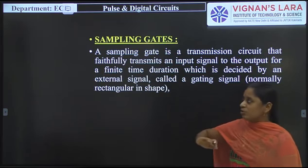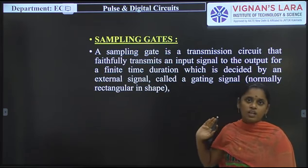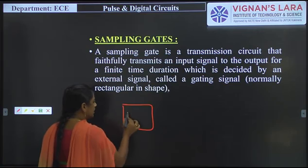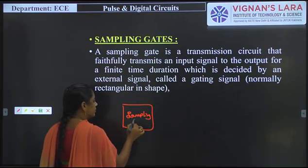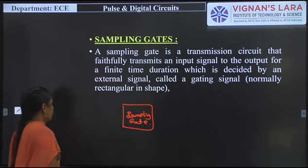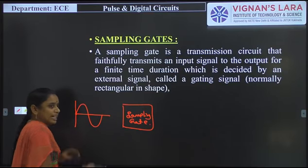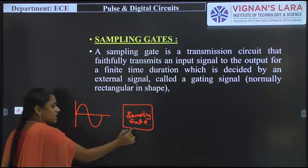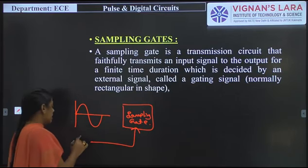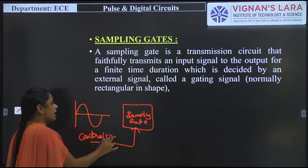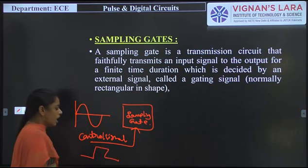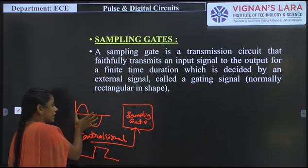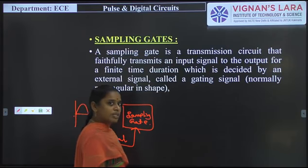In most cases, this control signal is a rectangular or pulse signal. My input signal might be a sinusoidal signal, and I want to transmit it at the output — but not continuously. It depends upon the control signal. Whenever this pulse signal is high, during that time only, the input signal reaches the output side. In the remaining times the output will be 0.